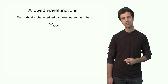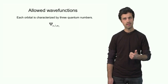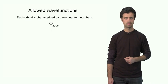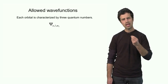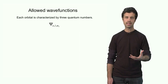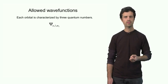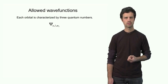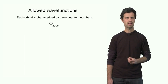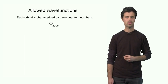We found three quantum numbers: n, l, and ml. The allowed values for these quantum numbers define the shape of these wave functions, or orbitals. So the orbital shape is defined by the allowed values of the quantum numbers.